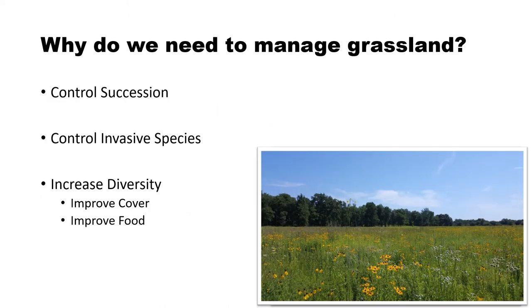So why do we need to manage grasslands? The first reason is to control succession. Naturally these prairies want to become woodlands, so in order to keep them as grasslands we need to implement management strategies. The second reason is to control invasive species, which have a nasty habit of making it into our grasslands and must be managed. The last reason is to increase diversity, as wildflowers tend to drop out of prairie plantings over time.